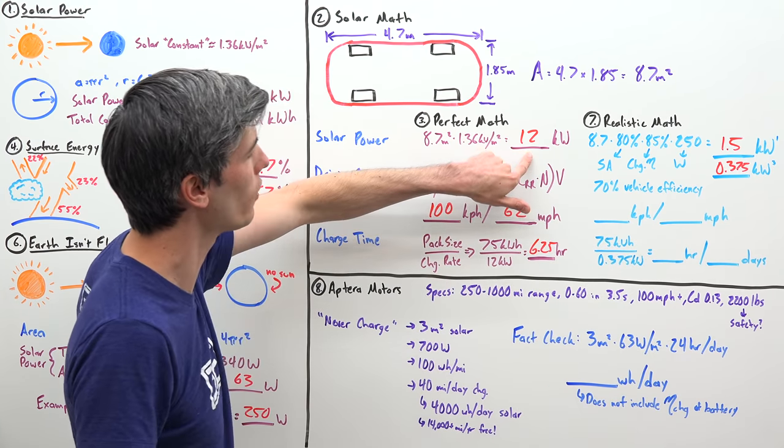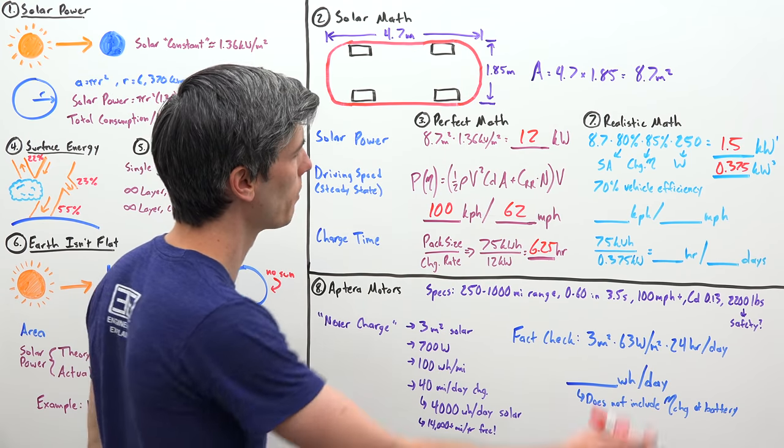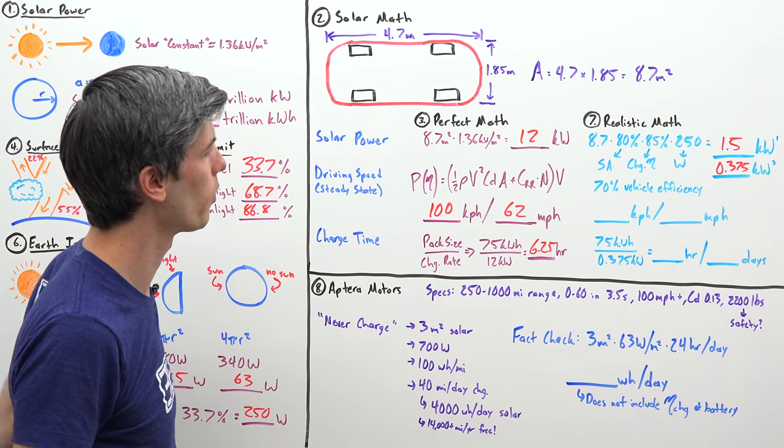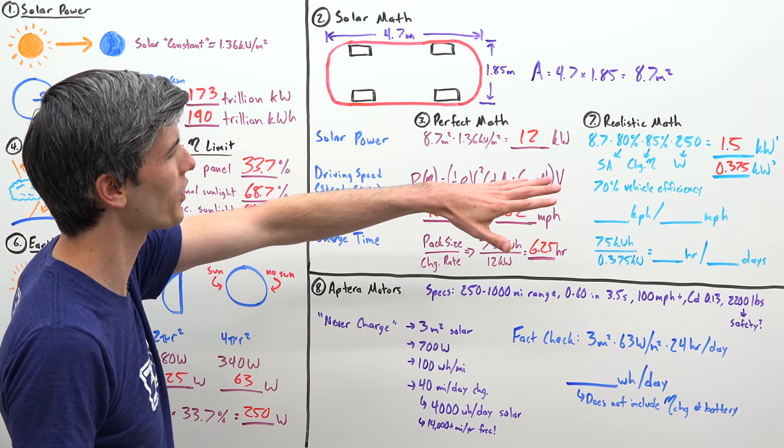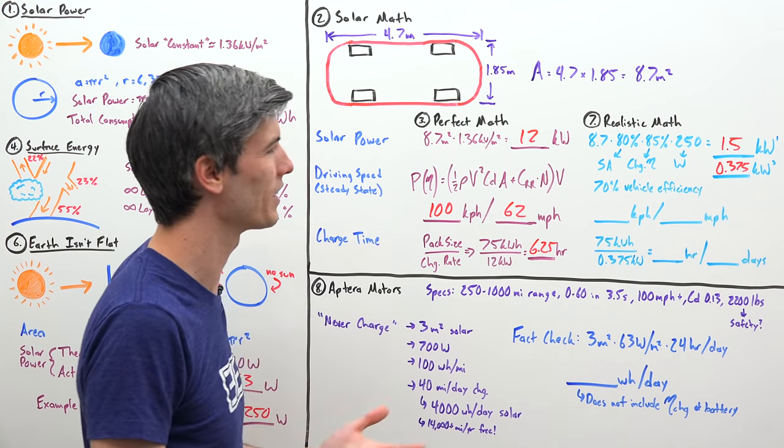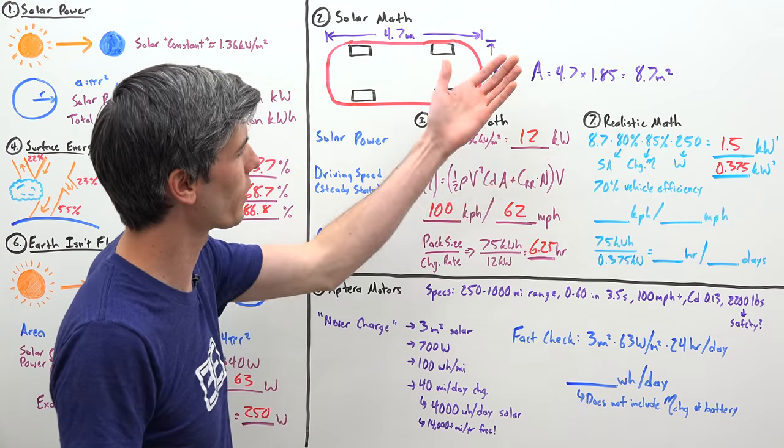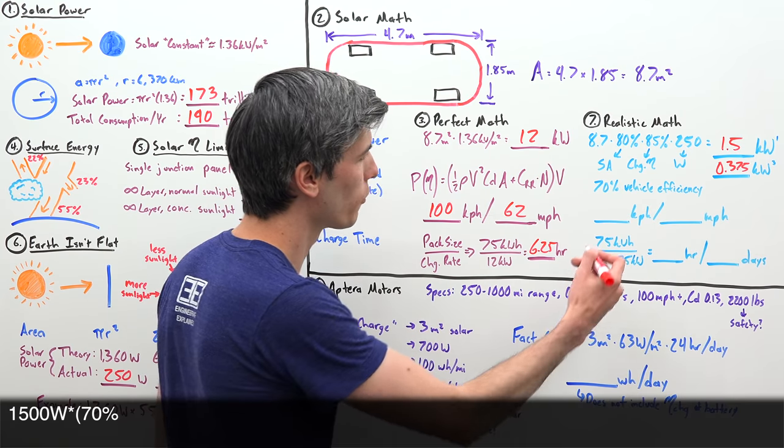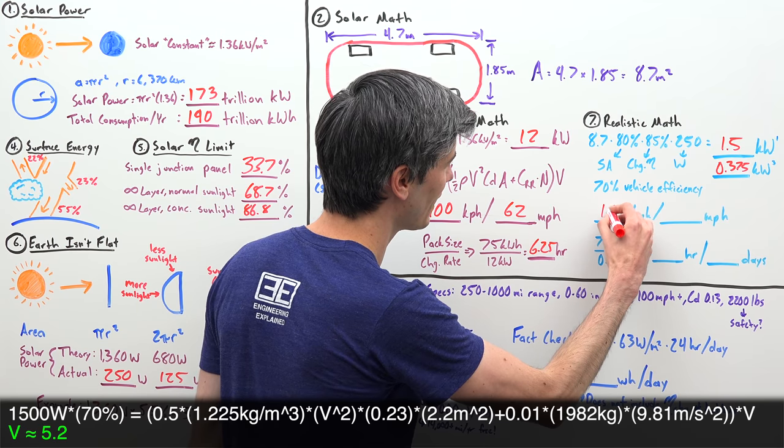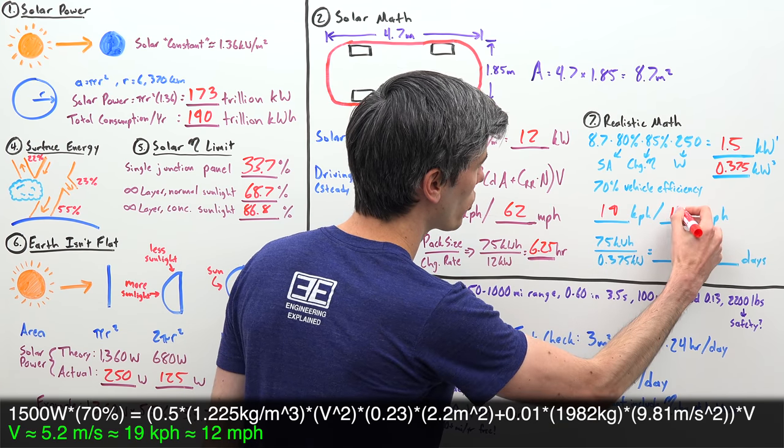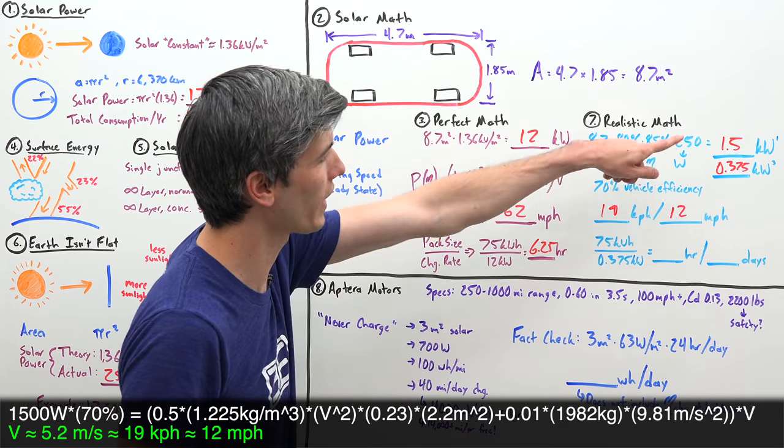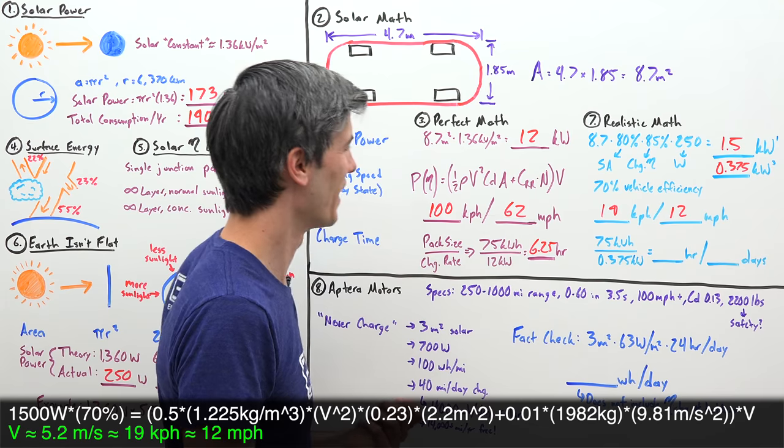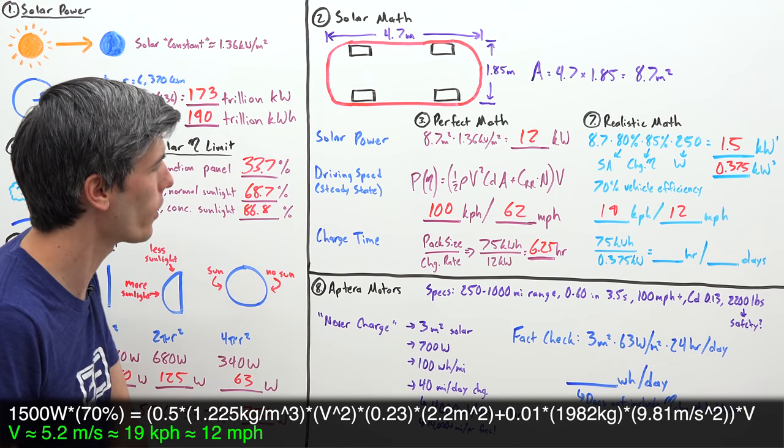So not very good. We were talking about 12 was like this magical number just based on its surface. But realistically, it's going to be somewhere in this range of 0.375 to 1.5. So what is our driving speed that we could theoretically drive at forever if we were getting this much power from the sun? Well, unfortunately, it is just about 19 kilometers per hour or about 12 miles per hour. And that's using that best case 1.5 kilowatts of power hitting the car.